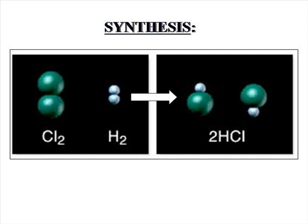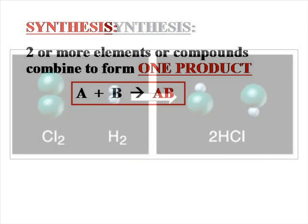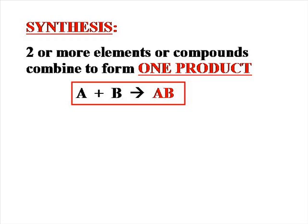Synthesis reactions, such as this example, make one product. You can see chlorine gas and hydrogen gas have bonded to form one product containing both of these elements, hydrogen chloride gas. You will recognize the synthesis reaction because, to the right of the arrow, there will be simply one product. Two or more elements will combine to form one product.